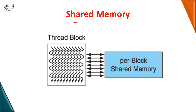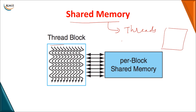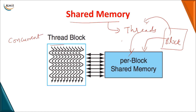The next type of memory is shared memory. In a thread block, all the threads need to use a common memory, which is called shared memory. Shared memory is shared by all the threads in a block for communication purposes. It is present per block — each block has its own shared memory, and all threads within the block use the same portion of memory. You can also have concurrent access, where two or three threads access data in shared memory simultaneously.